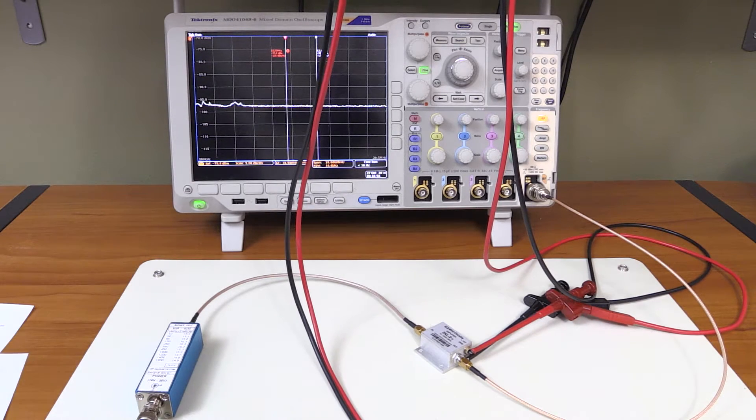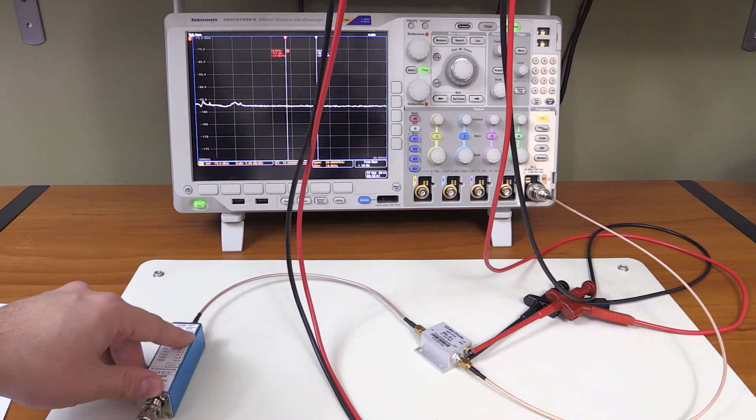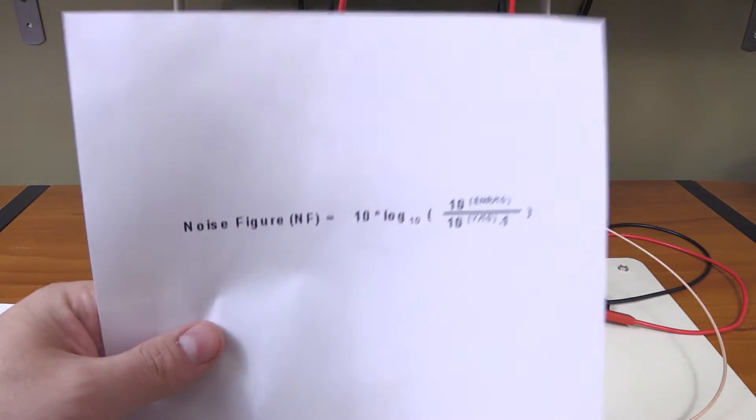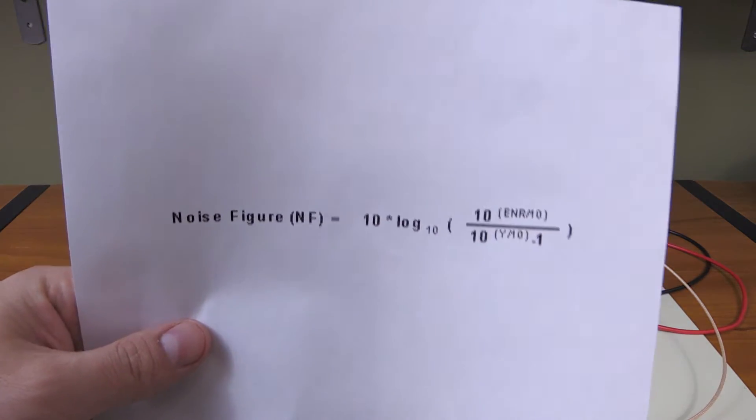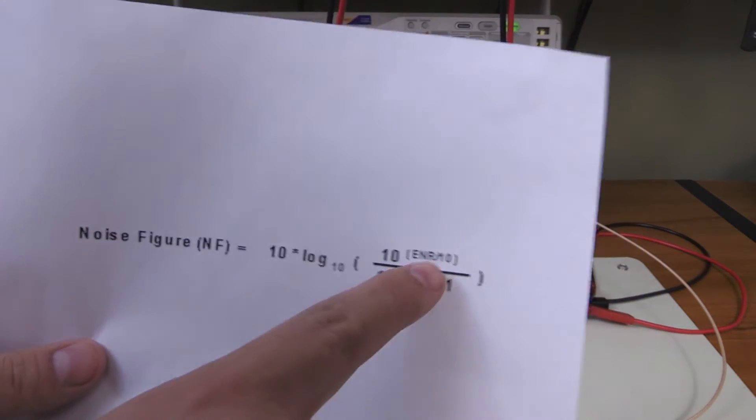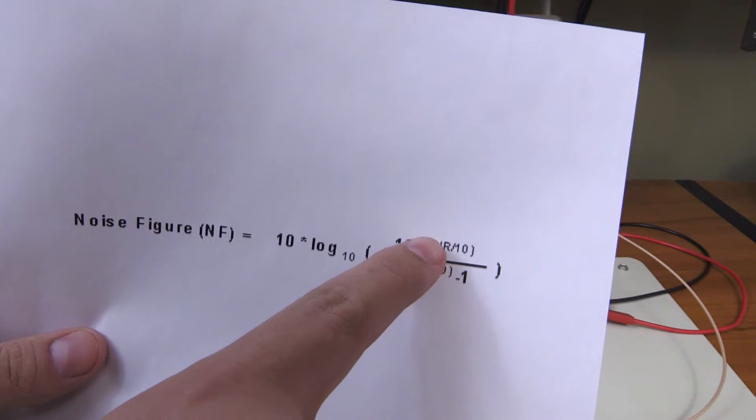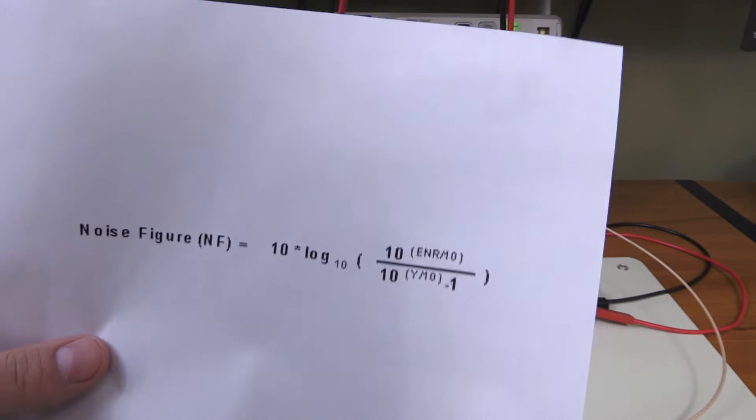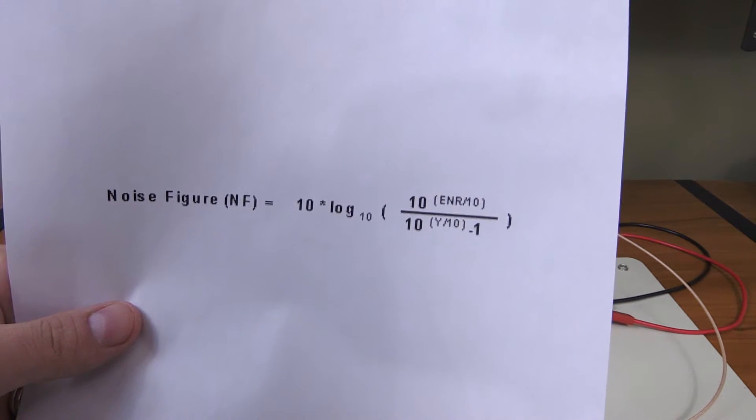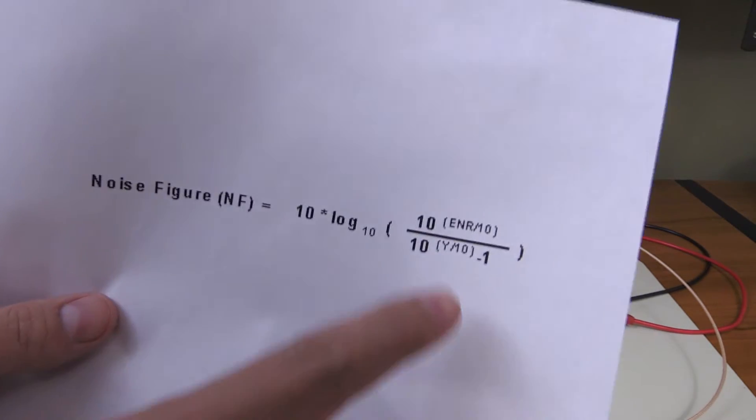We plug all the numbers and the excess noise ratio of the noise source into a formula. Pretty straightforward—we just need to determine our ENR, which stands for excess noise ratio in dB. That's the noise level coming out of our noise source above Johnson-Nyquist or thermal noise.